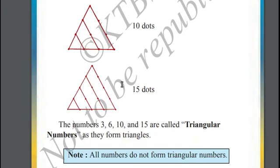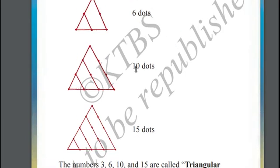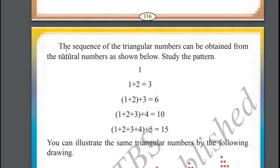Similarly, in the fourth example as well. These numbers - three, six, ten, fifteen - are called triangular numbers because they form triangles. All numbers do not form triangular numbers. This special sequence of triangular numbers can be obtained from natural numbers.